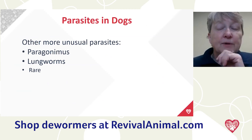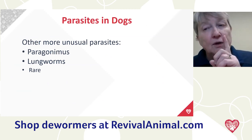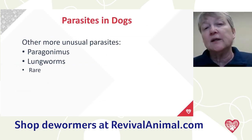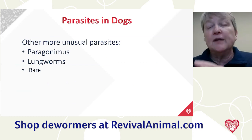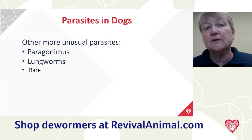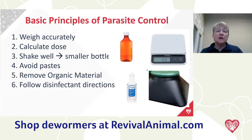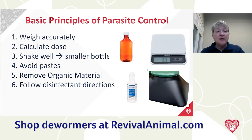There are some unusual parasites like Paragonimus (lung flukes) — I've diagnosed that once in 40 years of practice, and lungworms once. These are rare, but be aware they exist, and if your vet's lab report shows them in the feces, you should address it. To recap the basic principles: weigh your puppies and dogs accurately, calculate the dose correctly, shake suspensions well and distribute into smaller bottles, avoid paste products, and remove feces and follow disinfectant instructions.